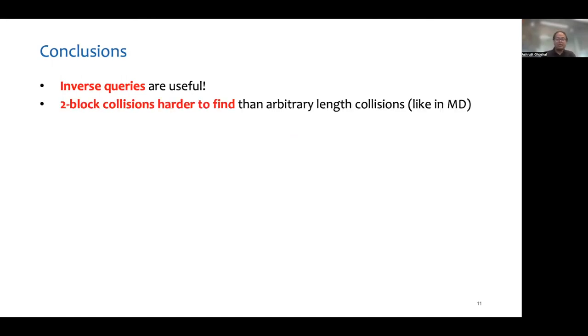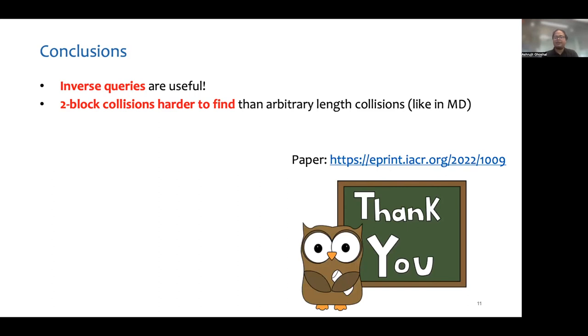Secondly, shorter collisions are probably harder to find than longer ones for the sponge construction, just like Merkle-Damgard. For more details, I invite you to our longer talk during CRYPTO and refer you to the full version of our paper on ePrint. Thank you.